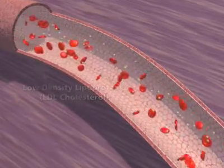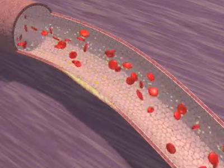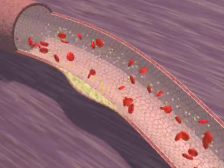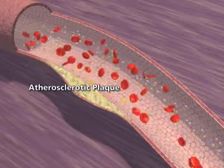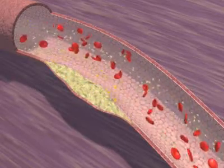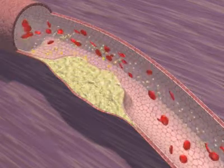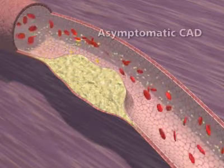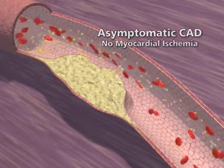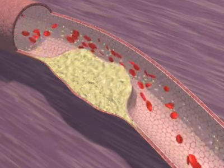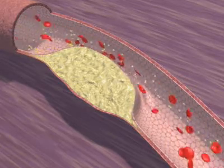Atherosclerosis begins when LDL cholesterol accumulates in the arterial wall, forming a plaque. Over time the plaque becomes larger. Some plaques never obstruct coronary blood flow. The patient with asymptomatic coronary disease has no chest pain and no myocardial ischemia. A plaque can enlarge to the point that blood flow is compromised.